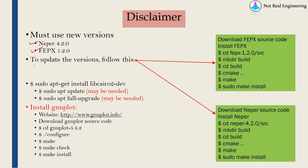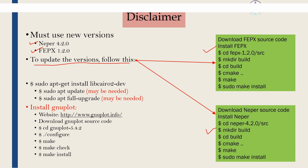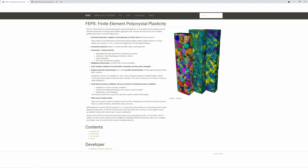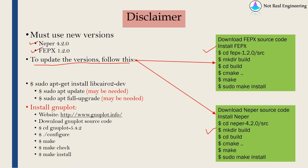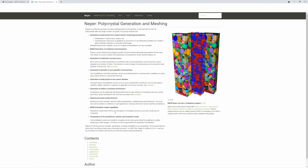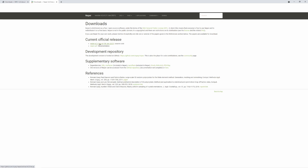To update to the newer version you can follow these steps — this is for FEPX and this is for NEPER. For example, to download the FEPX source code you just go to the FEPX website, go to the download section, and download the source code. Once you extract the zip file you just type the listed commands in a terminal and it will be installed. Similarly for NEPER, go to NEPER's website, go to downloads, and download the 4.2.0 version.